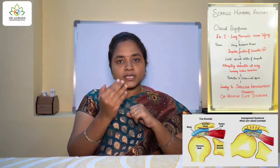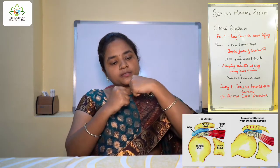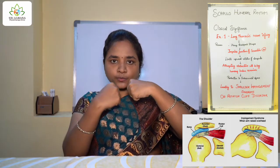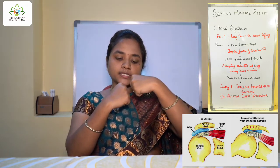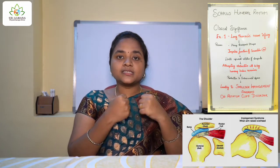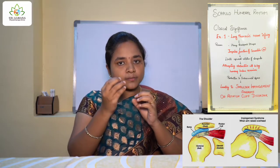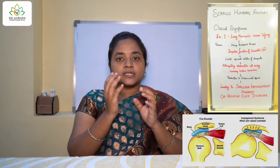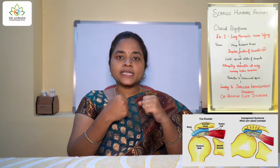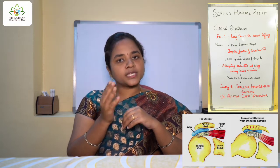When you attempt to move your shoulder into abduction, the acromion remains stable — it will not move in relation with the humerus. So what happens is the humerus falls under the acromion and the subacromial space is reduced. As shown in the picture, the structures passing through the subacromial space will get impinged, resulting in shoulder impingement syndrome or rotator cuff disorders.